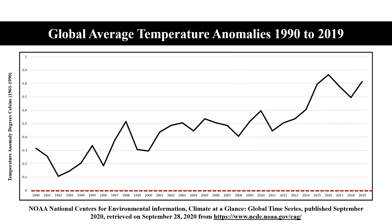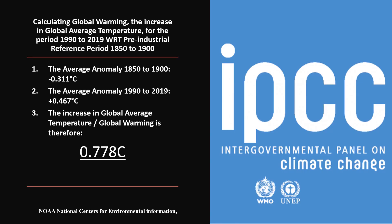As a control, we also refer to NOAA data for the same period adjusted to be anomalous to 1961 to 1990. The global average temperature anomaly is 0.467 degrees Celsius. Using NOAA data, therefore, global warming is 0.778 degrees Celsius.